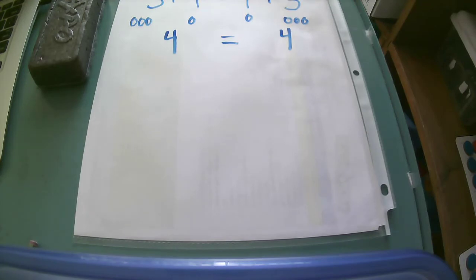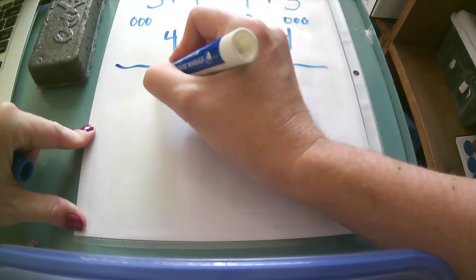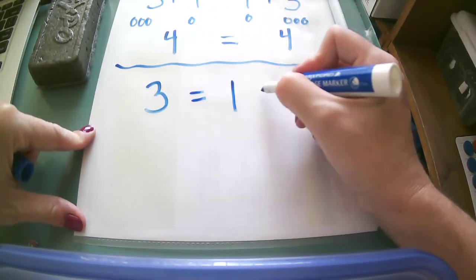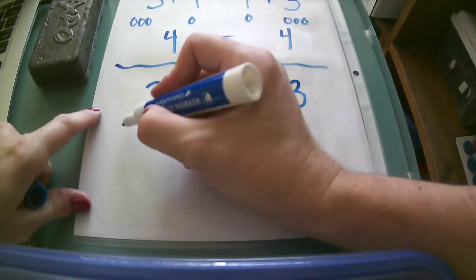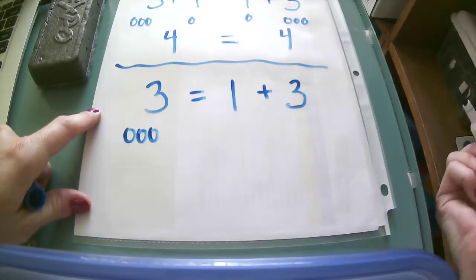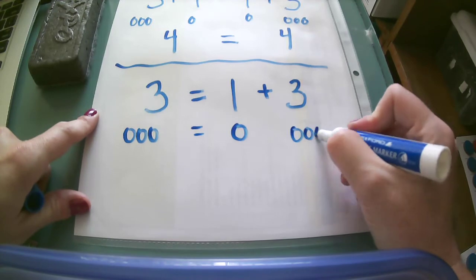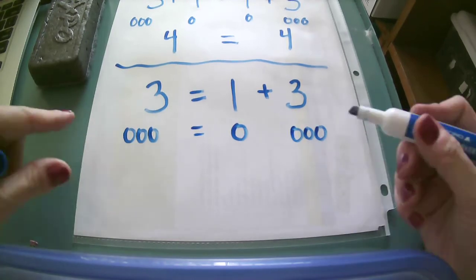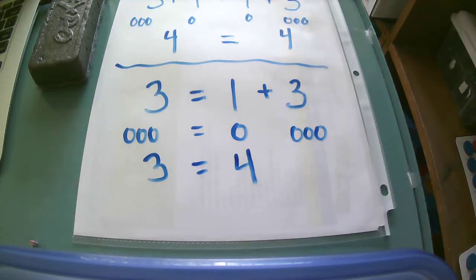Let's look at another problem here. This time we're going to say 3 is the same as 1 plus 3. On this one, I have 3 circles. On the other side of the equal sign, I have one circle and 3 more circles. I know that this is 3 equals 4, but 3 and 4 are not the same. They do not equal each other. 4 is more, so I cannot use the equal sign there.